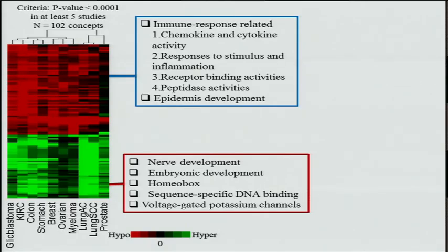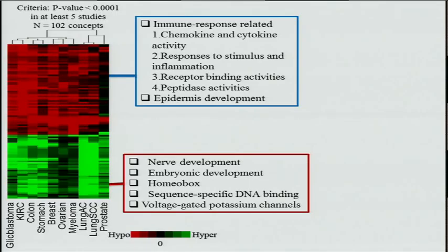Among the hypermethylated gene sets were nervous system embryonic development and homeobox genes. There's a lot of overlap with PRC2 targets here, as well as transcription factors represented by sequence-specific DNA binding, and voltage-gated potassium channels, which are also known to be important in cancer.